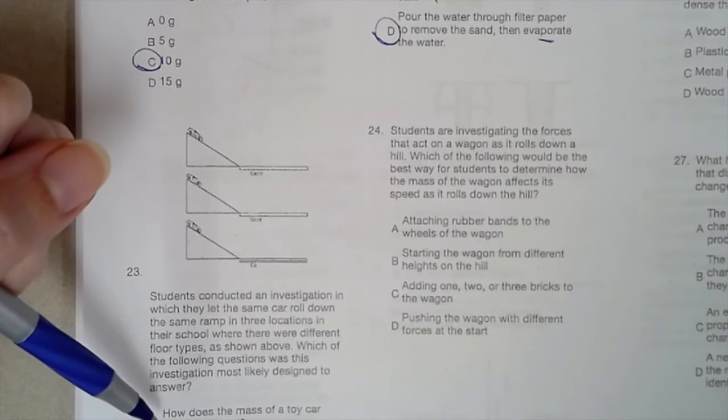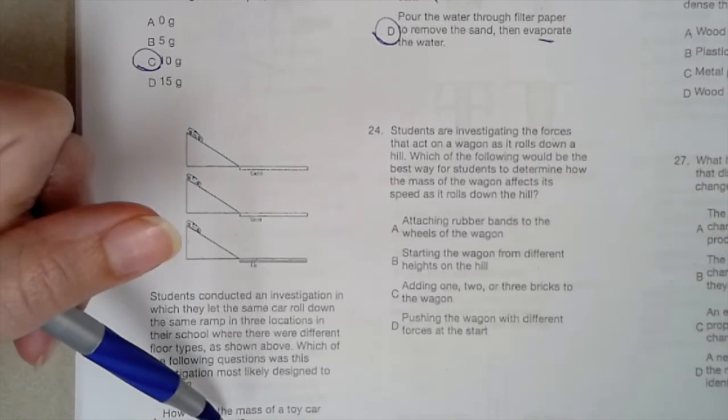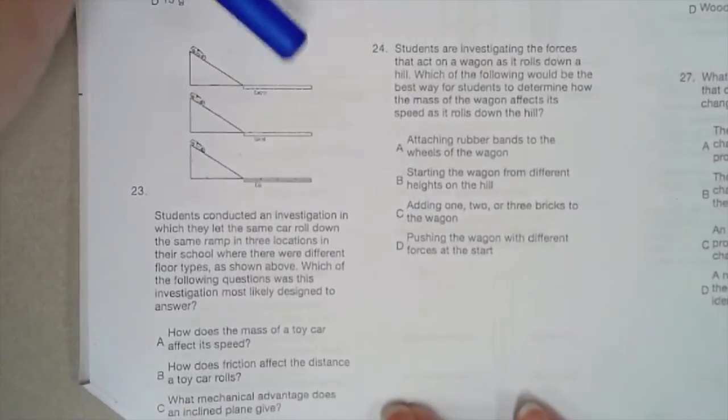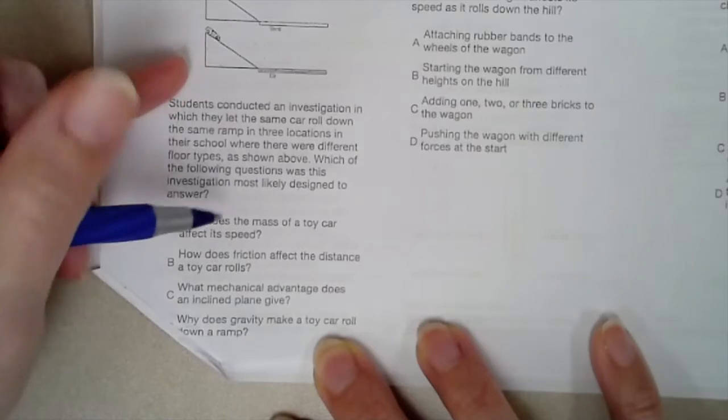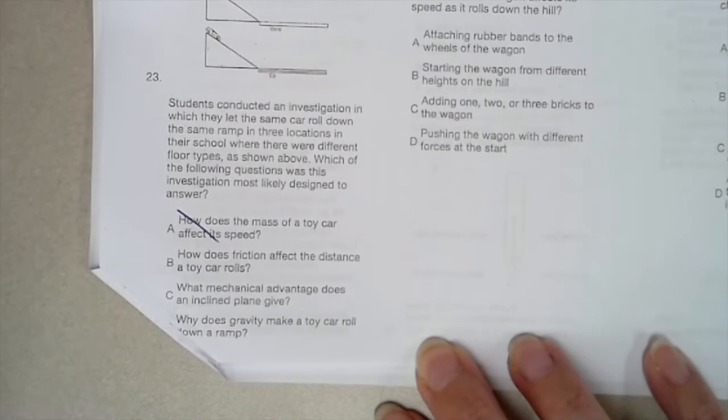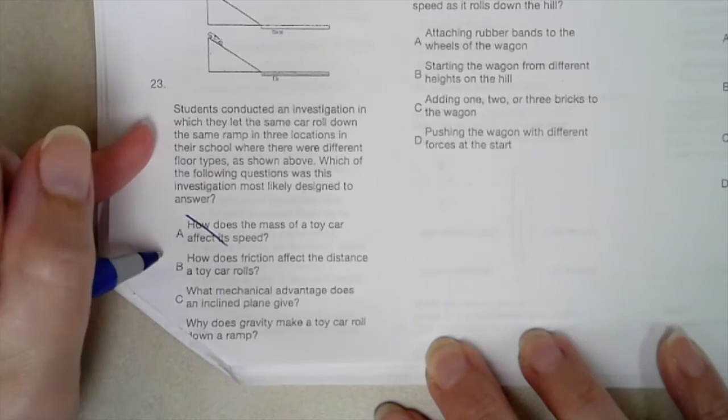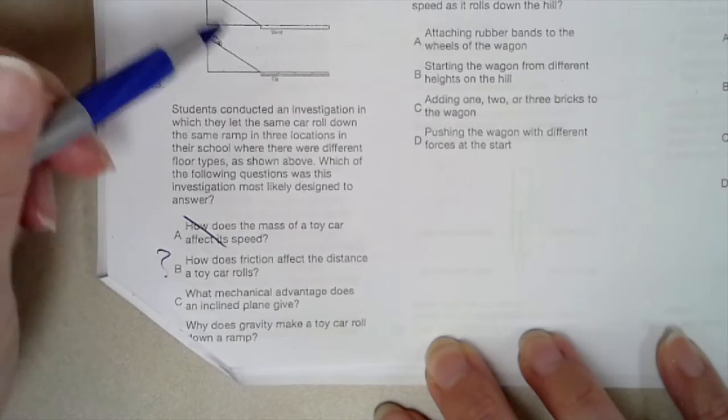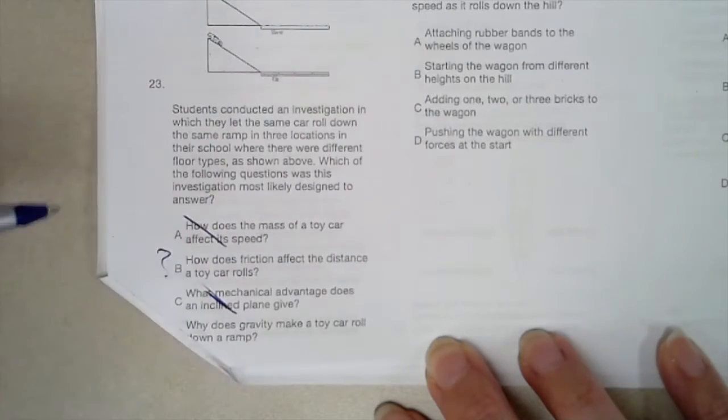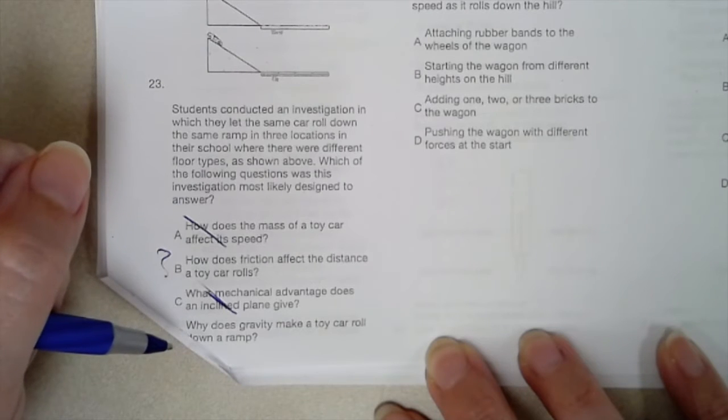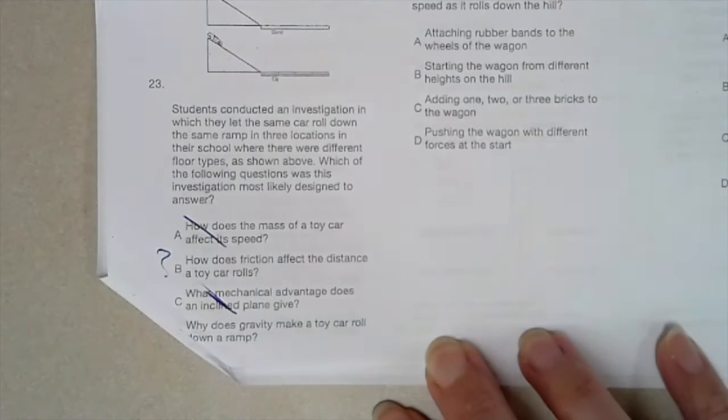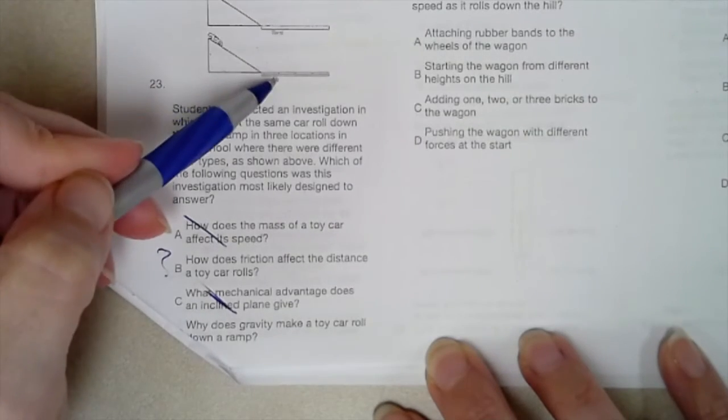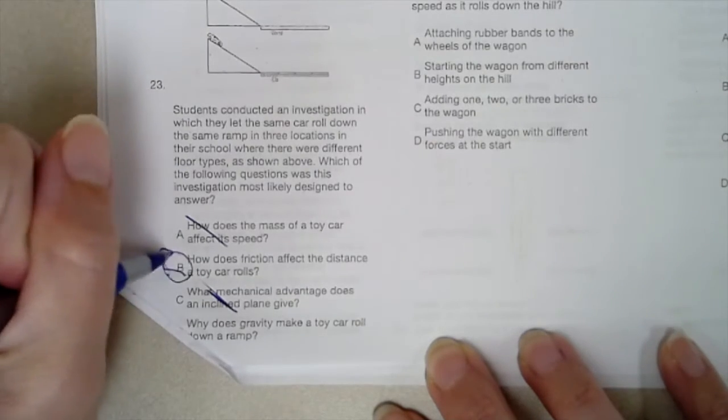Are they trying to answer A, how does the mass of the toy car affect its speed? Did they change the mass of the toy car? No. B, how does friction affect the distance a toy car rolls? That could possibly be it. C, what mechanical advantages does an inclined plane give? Did they change the ramp at all? No. D, why does gravity make a toy car roll down a ramp? They could be investigating that because in all three you have a car rolling down a ramp. But the best one is actually B because these different surfaces are going to provide different amounts of friction. So B is the most likely answer.